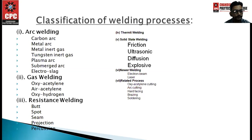In the classification of welding processes, the first type is arc welding, with subdivided parts: carbon arc, metal arc, metal inert gas, tungsten inert gas, plasma arc, submerged arc and electro slag arc.